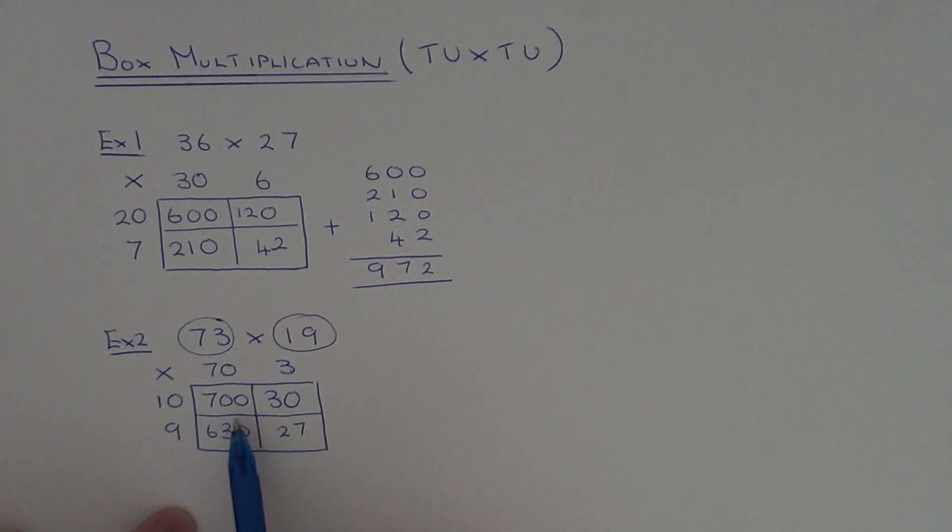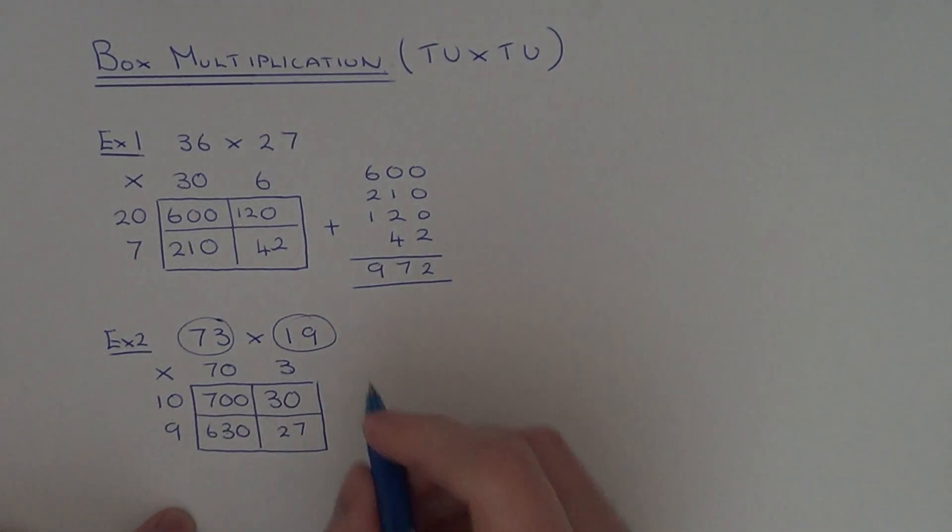So all you need to do now is add these four numbers up. So we've got 700, add 630, add 30, add 27.